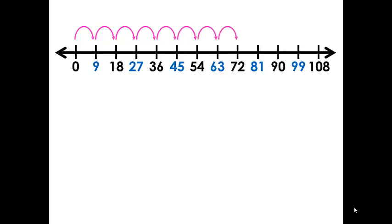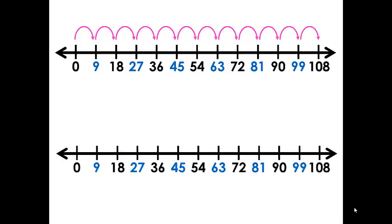63, 72, 81, 90, 99, 108. We're going to look at a number line with the multiples of 9 and we're going to make 4 hoops and we're going to say 4 times 9 equals 36.